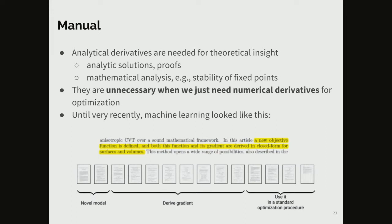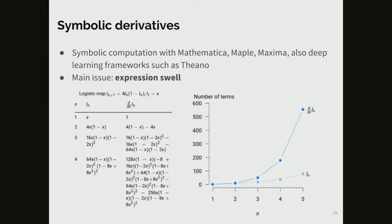Manual differentiation is needed for analytic solutions, proofs, and stability analysis. But it is unnecessary if you just want numerical derivatives for gradient-based optimization. Until recently in machine learning, a real paper would introduce a new model in the first two pages, then spend all the remaining pages deriving gradient equations so you could use them in an optimization procedure. Thanks to automatic differentiation, this has changed.